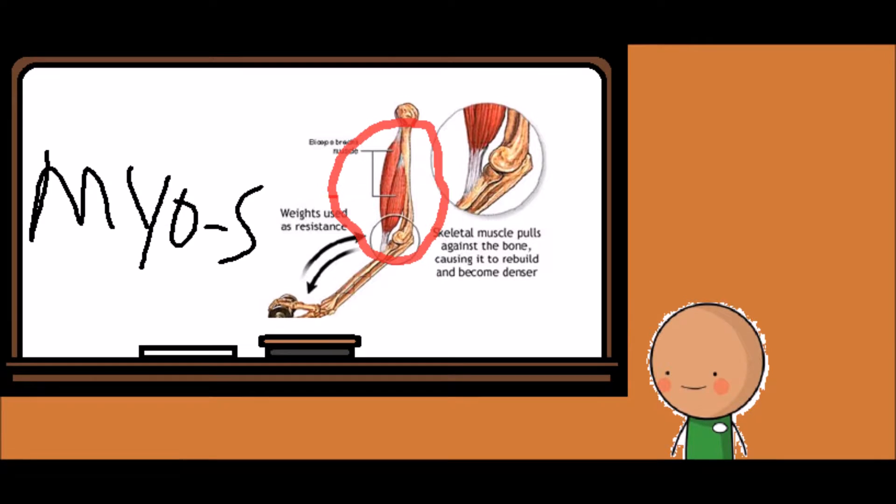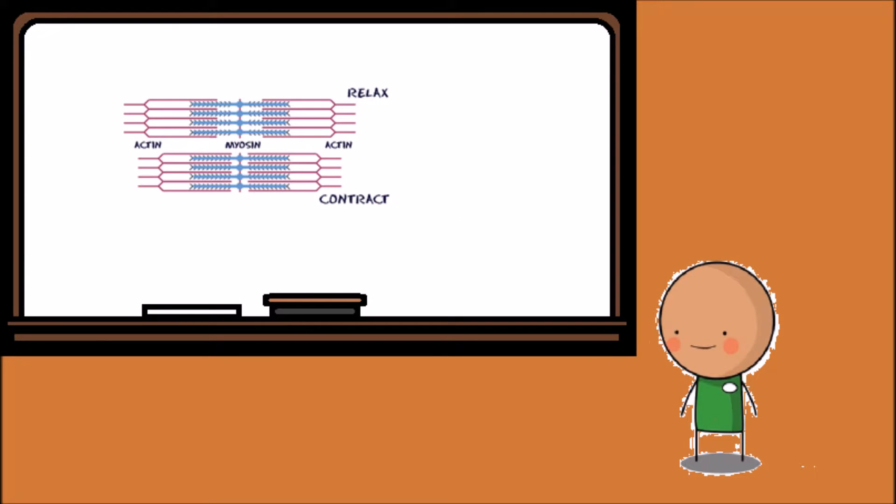Our muscle tissues, or myos, are attached to our bones to provide movement of the body structure. Muscles are made of protein filaments called actin and myosin, pulling together to move our bones.